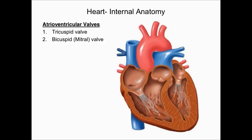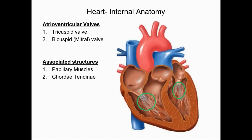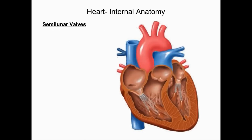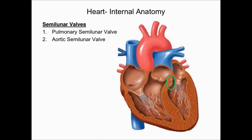Papillary muscles extend from the walls of the ventricles, and the chordae tendineae are the heart strings associated with atrioventricular valves. There are two semilunar valves. The pulmonary semilunar valve is found between the right ventricle and the pulmonary trunk, preventing oxygen-poor blood in the pulmonary trunk from flowing back into the right ventricle. The aortic semilunar valve is found between the left ventricle and the aorta, preventing oxygen-rich blood in the aorta from flowing back into the left ventricle.